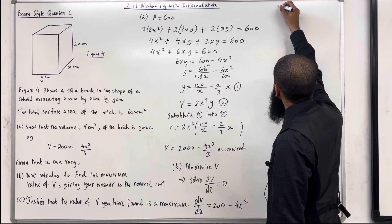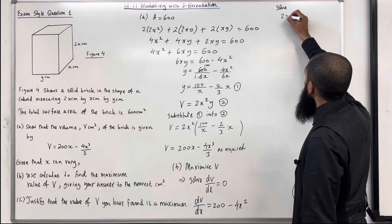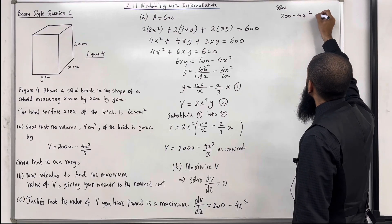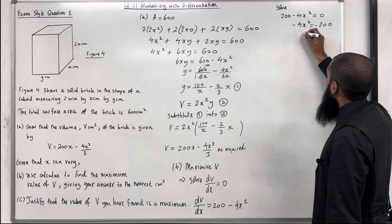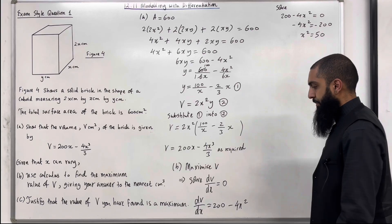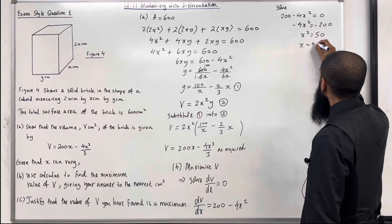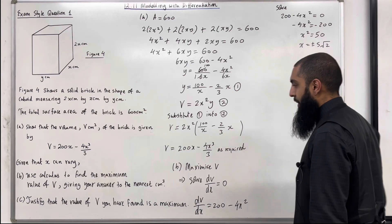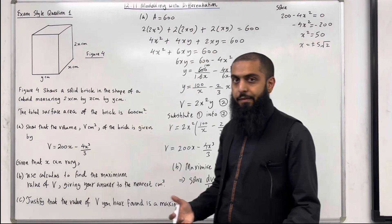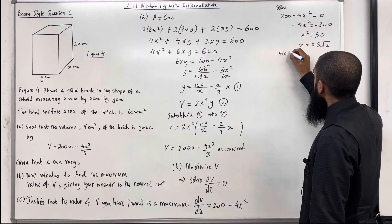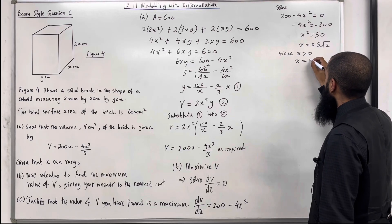Now we need to solve dv over dx: 200 minus 4x squared equals 0. So minus 4x squared equals minus 200, hence x squared equals 50. So x equals plus or minus 5 root 2 — since root 50 simplifies to 5 root 2. But since x represents a length, x is greater than 0, so we must have x equals 5 root 2.